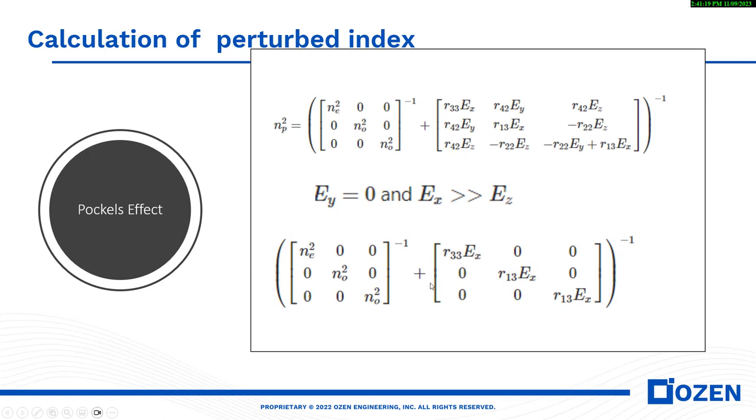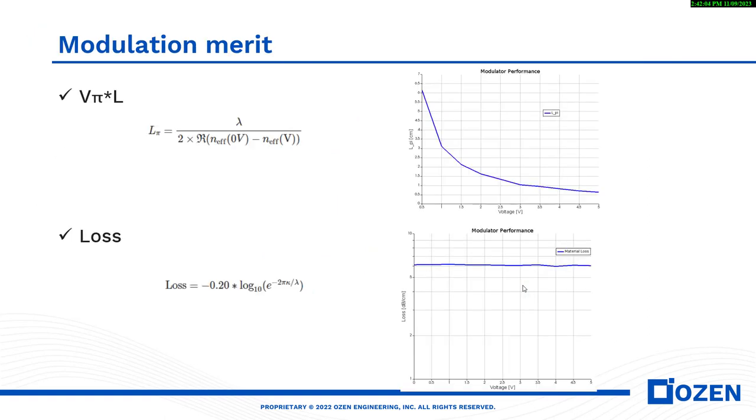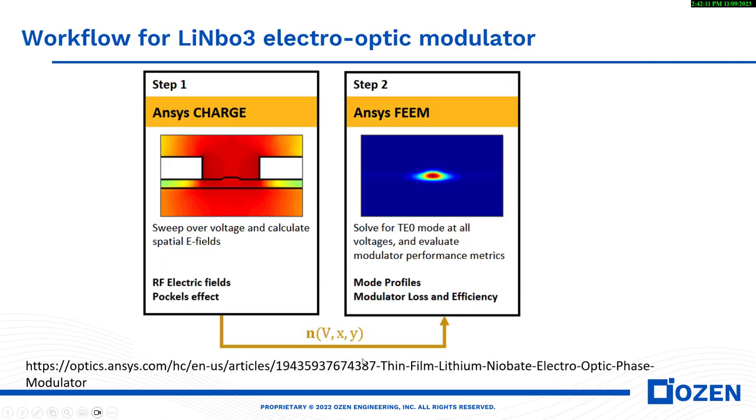You can see that to calculate the perturbed index, we need the extraordinary and ordinary value of the refractive index, effective index I mean. And also we need R33 and R13. So if I have R33 and R13 and Ne and No for the lithium niobate, it means that because the software calculates the Ex for me, then I can calculate the perturbed index. I know now in this stage how much my effective index changes by changing the value of voltage.